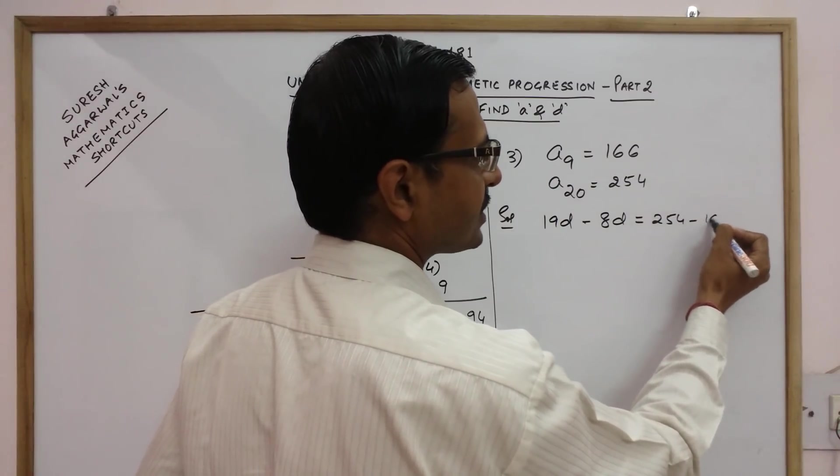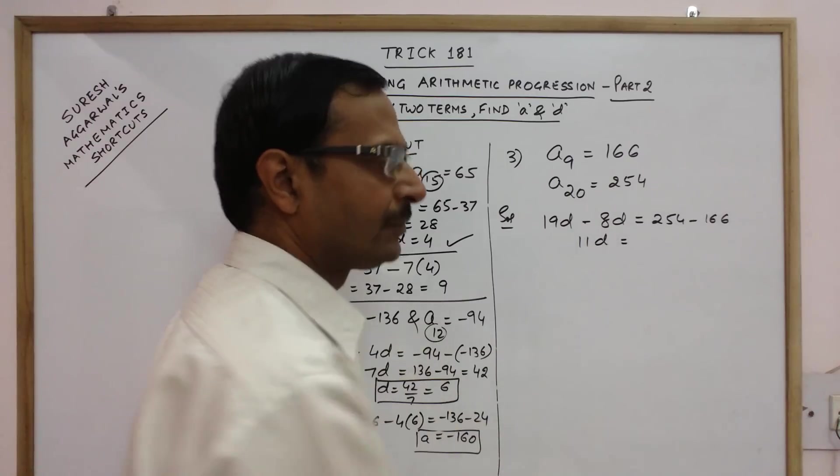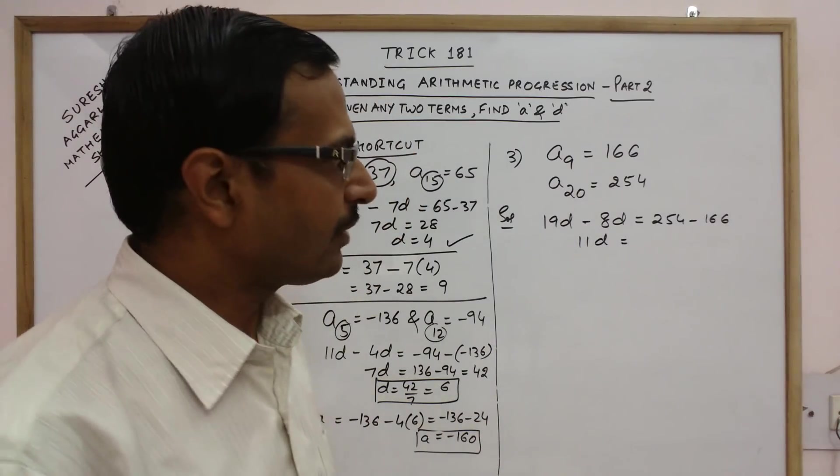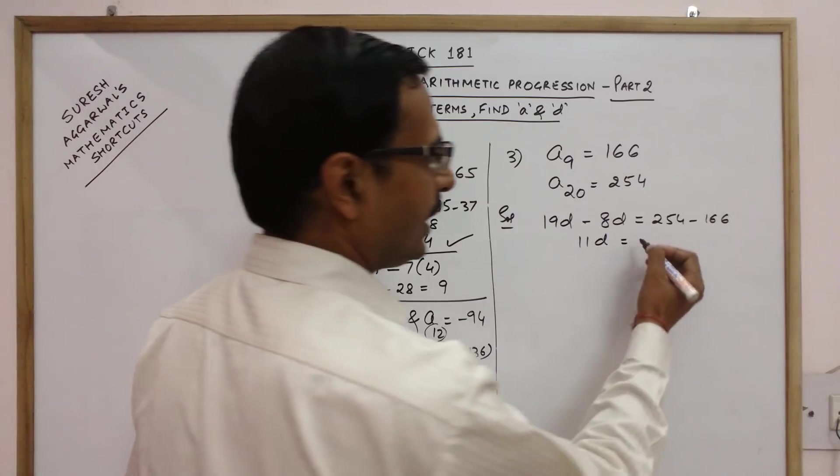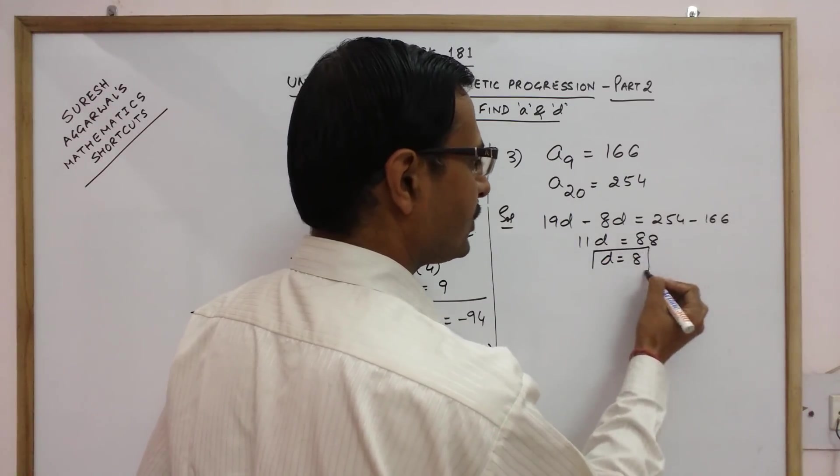254 minus 166. This will come out to be 11D. And when you subtract 254 and 166 you get 88. So D is 8. So one value is obtained.